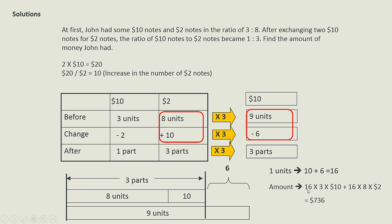All right, so the total amount of money that he has will be 16 times 3 times $10 to find the total value for the $10 notes, then plus 16 times 8 times $2, which is the total value of the $2 notes. And when you plus them together you get a total amount of $736.